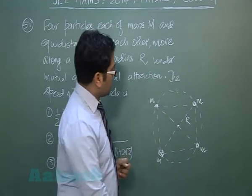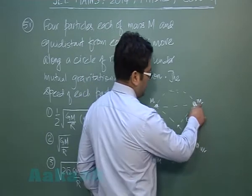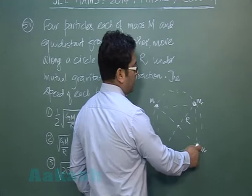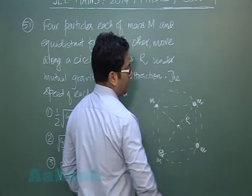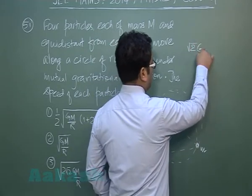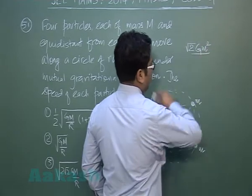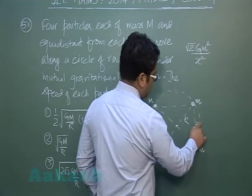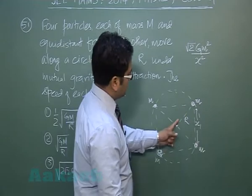Consider one mass - it experiences forces of attraction from this side, this side, and this side. Using superposition, the net force is √2·GM²/x², where x is the distance that can easily be found out because it's a right-angled triangle.